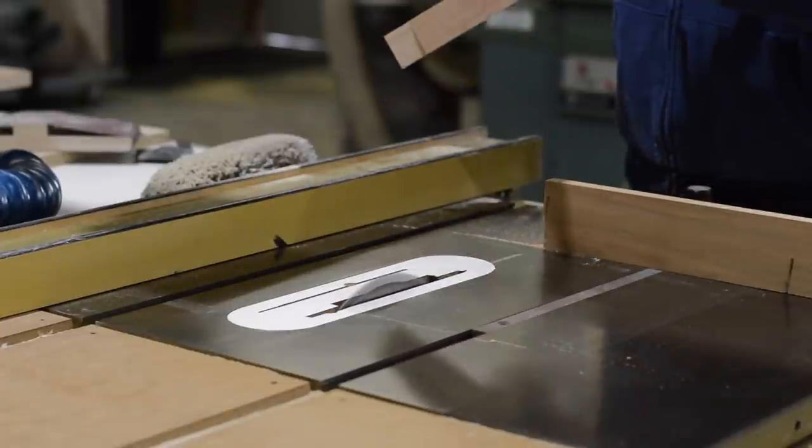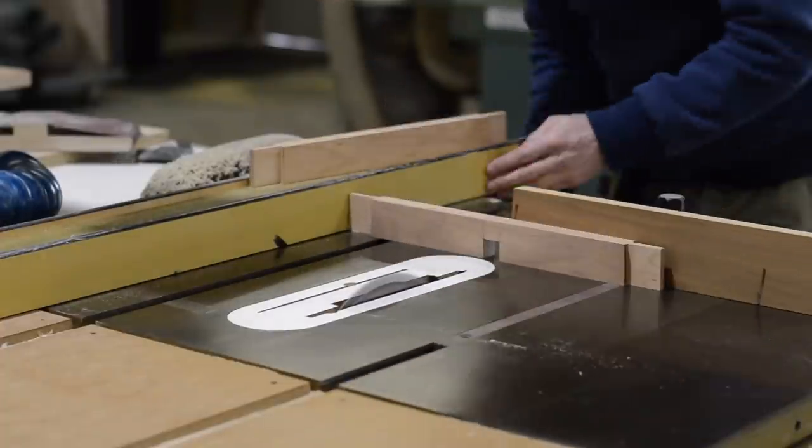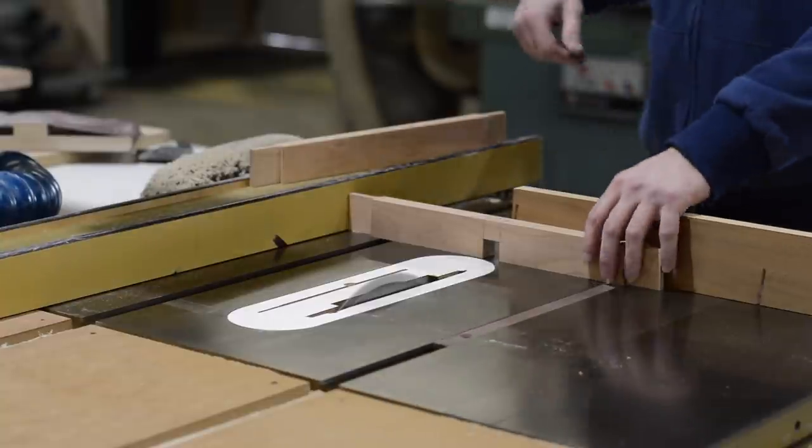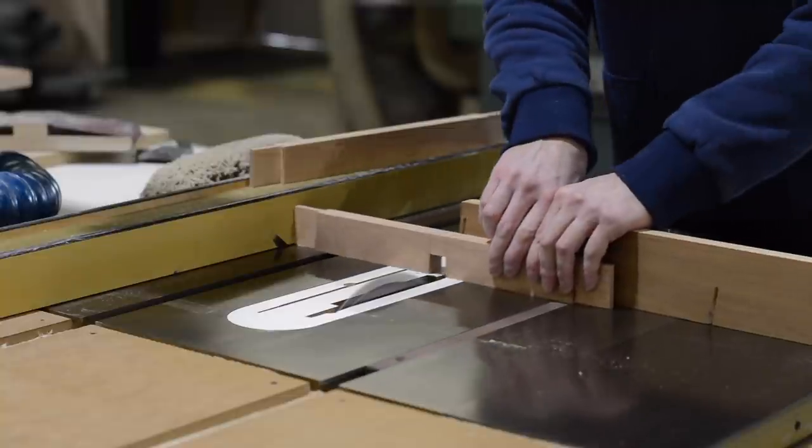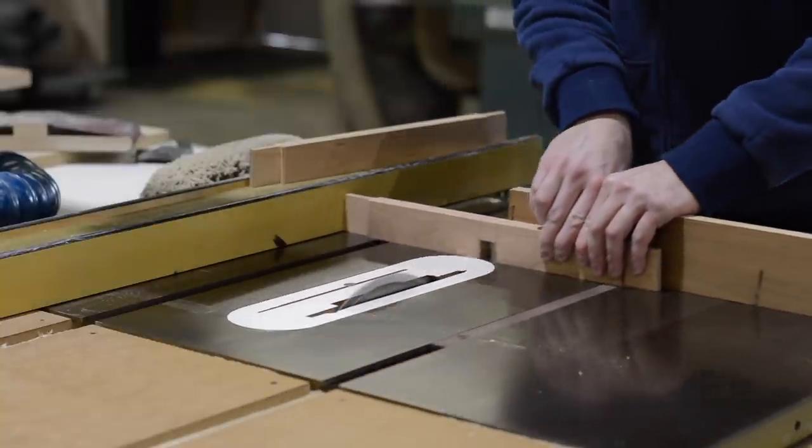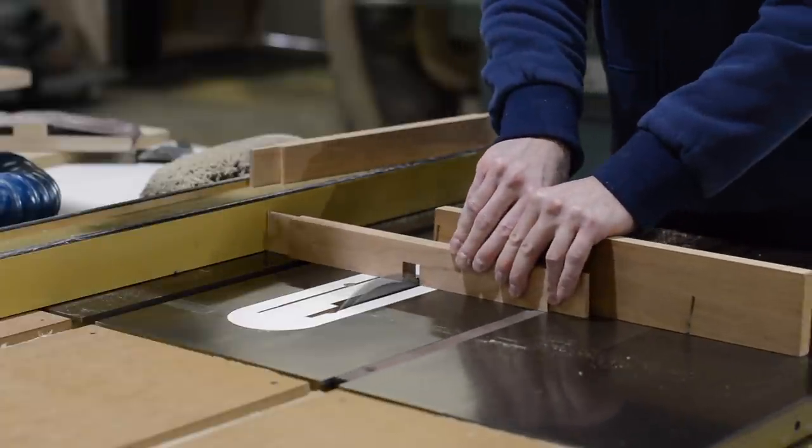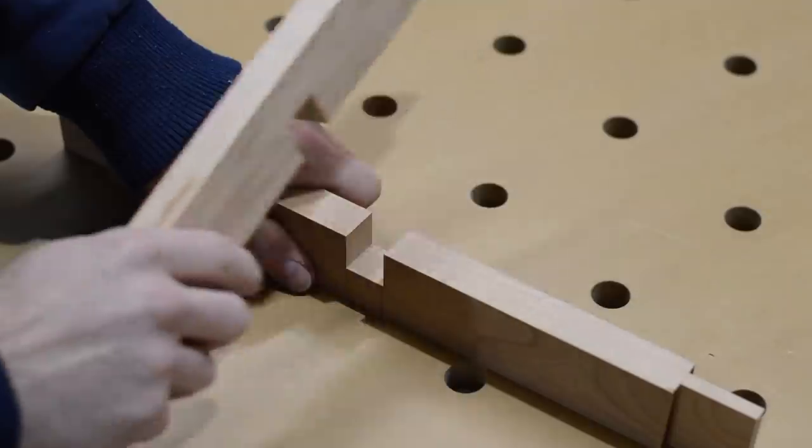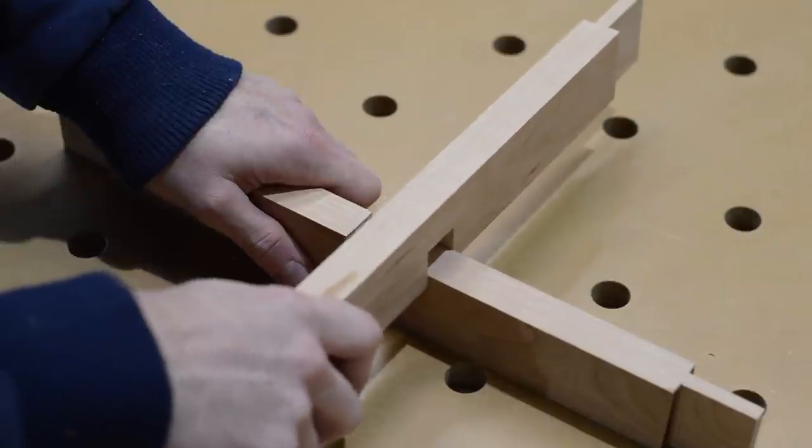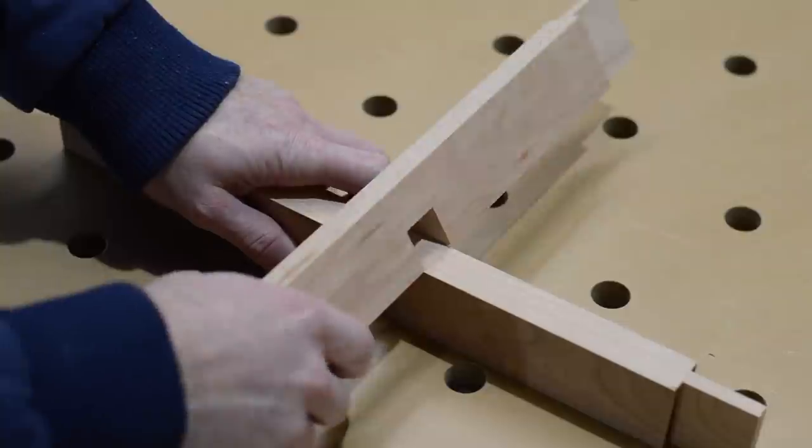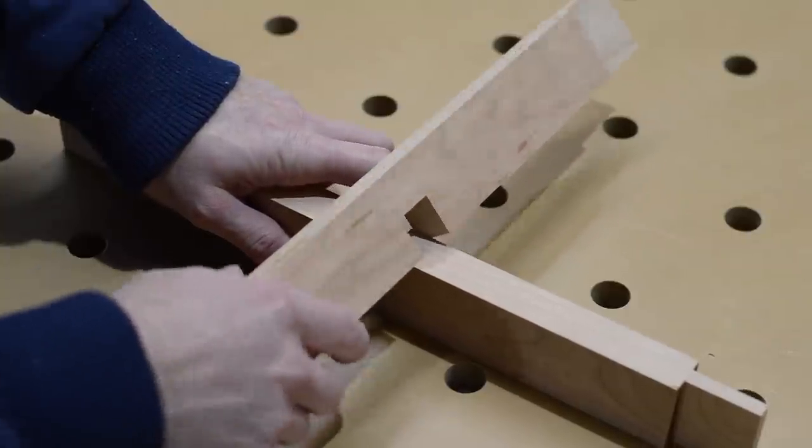Anytime I'm doing real simple joinery like this, I don't take the time to make a test piece. My actual workpiece is the test piece. I just make conservative small adjustments and I creep up on the fit. And once again, I want the fit on this joinery to be a little too tight. This way a couple of swipes with a hand plane and it will fit just the way that I want.